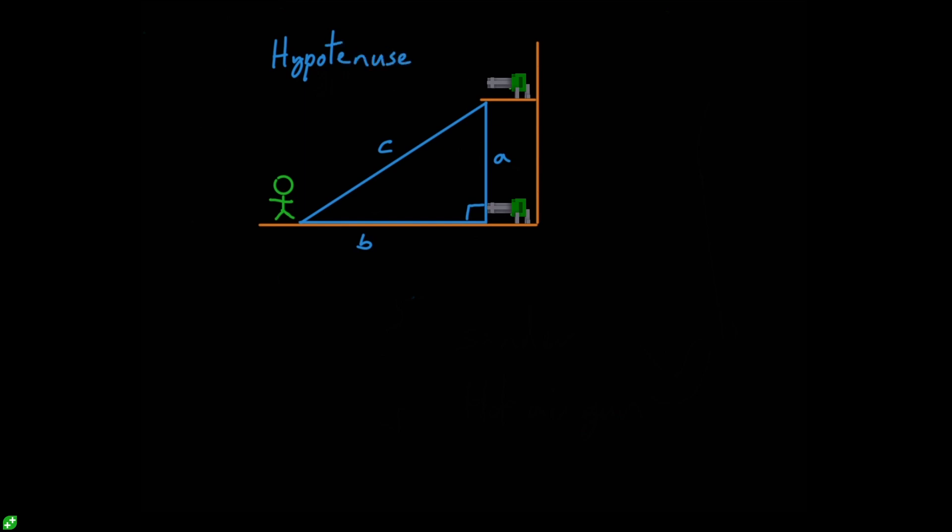And the hypotenuse is always the longest side of our right triangle and always sits opposite our right angle. So whenever you have your right angle, the line opposite that will be your hypotenuse. The word hypotenuse roughly translates to stretch under. You can kind of think of it as stretching under or in this case, over our right angle.